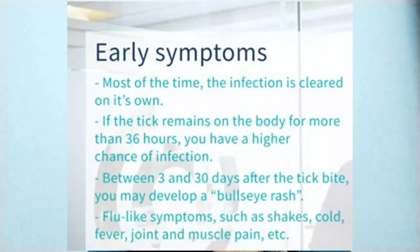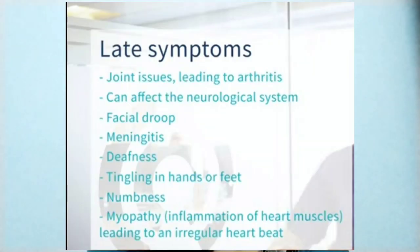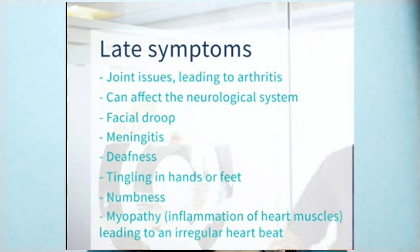What are the late symptoms? In the late stage, Lyme disease affects the musculoskeletal system, nervous system, and cardiac system. The patient may develop joint pain leading to arthritis, tingling and numbness in the hands and feet, meningitis, and deafness. It also affects the cardiovascular system — myocarditis will occur, meaning inflammation of the heart muscles leading to irregular heartbeat. The neurological system is affected as well. These are the late symptoms.